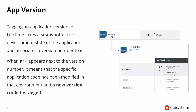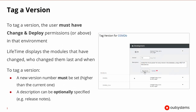When this app version number has a plus sign next to the version, it means that that specific application code has been modified in that environment, and a new version could be tagged because this is no longer the most current version. To tag a version, all we have to do is click the tag version button. A user must have change and deploy permissions to be able to see that button and use it.